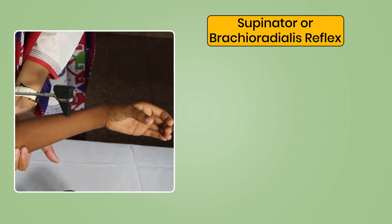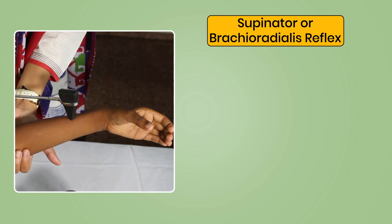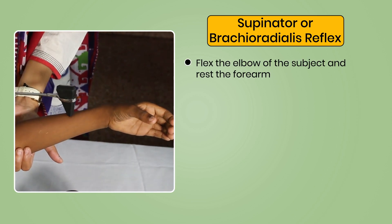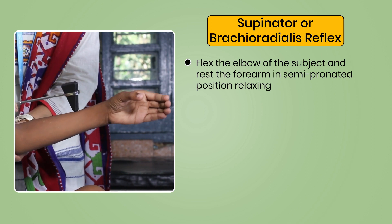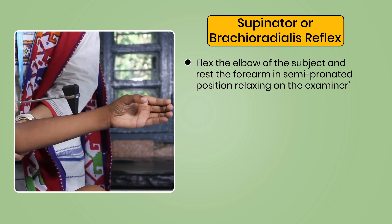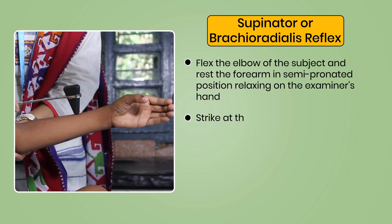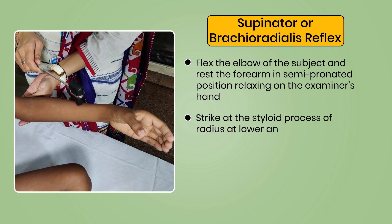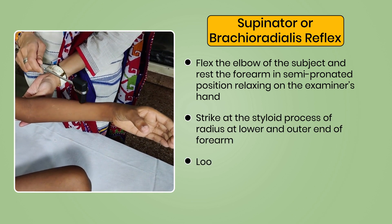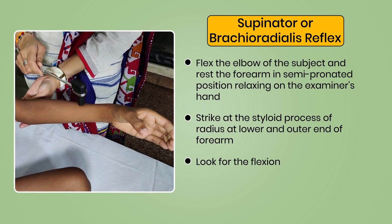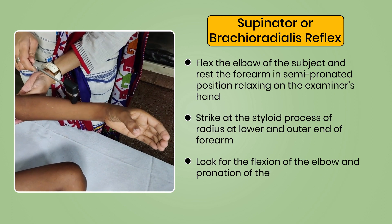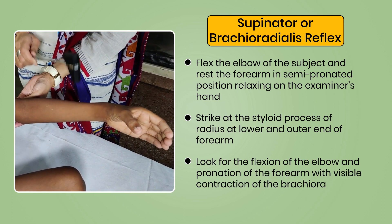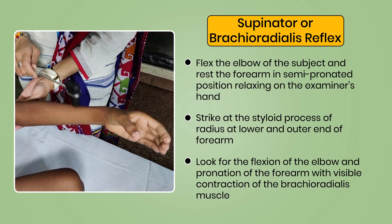Supinator or brachioradialis reflex: flex the elbow and rest the forearm in semi-pronated position on the examiner's hand. Strike at the styloid process of radius at the lower and outer end of the forearm. Look for flexion of the elbow and pronation of the forearm with visible contraction of the brachioradialis muscle.